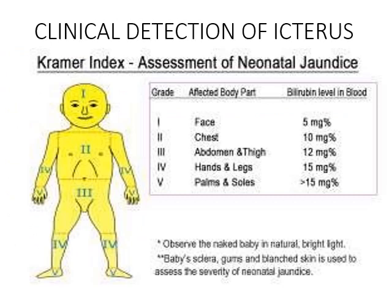You should also use the Kramer index to assess the severity of neonatal jaundice. You observe the baby in natural bright light and check the sclera, gums, and skin. When jaundice is mostly in the face, that is grade 1, corresponding to about 5 mg/dL bilirubin. The chest corresponds to about 10 mg/dL, the abdomen about 12 mg/dL, and the palms and soles about 15 mg/dL.